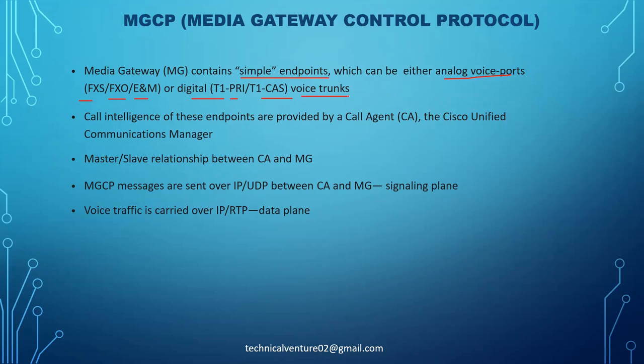We can use E1 and events as well. E1 is mainly used in the India region, and T1 is used in the US or Canadian region. E1 has 32 channels and T1 has 24 — that is 23B plus D. B is for bearer and D is for signaling, the data channel. E1 contains 30B and 2D: 30 channels for bearer (voice) and 2D for signaling and synchronization.